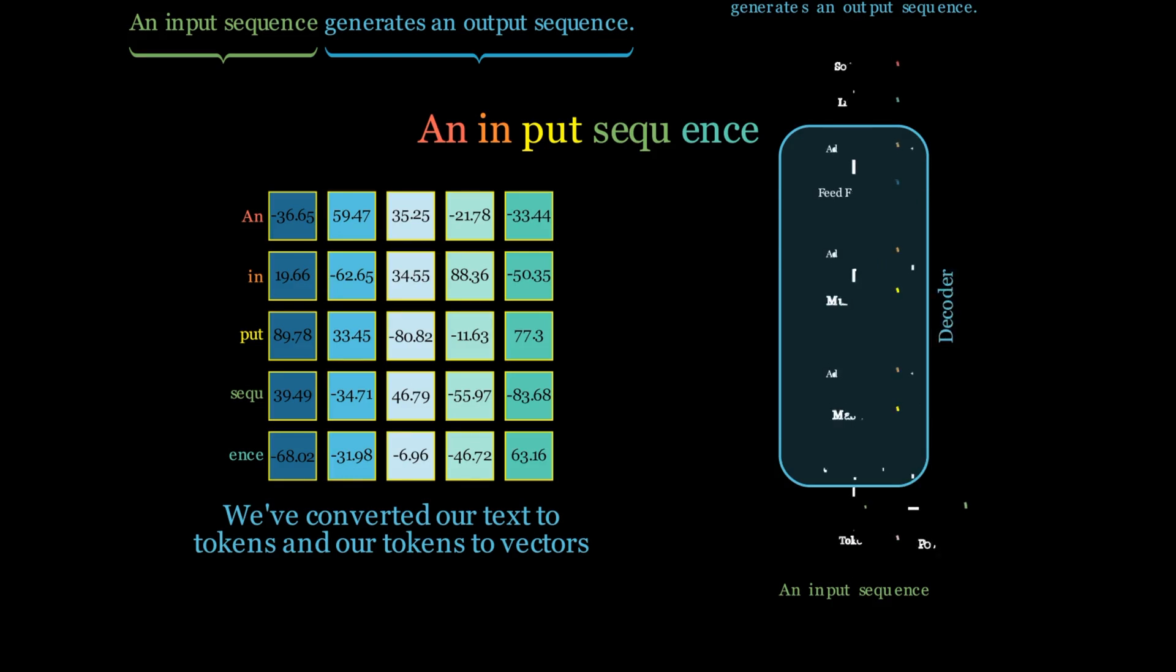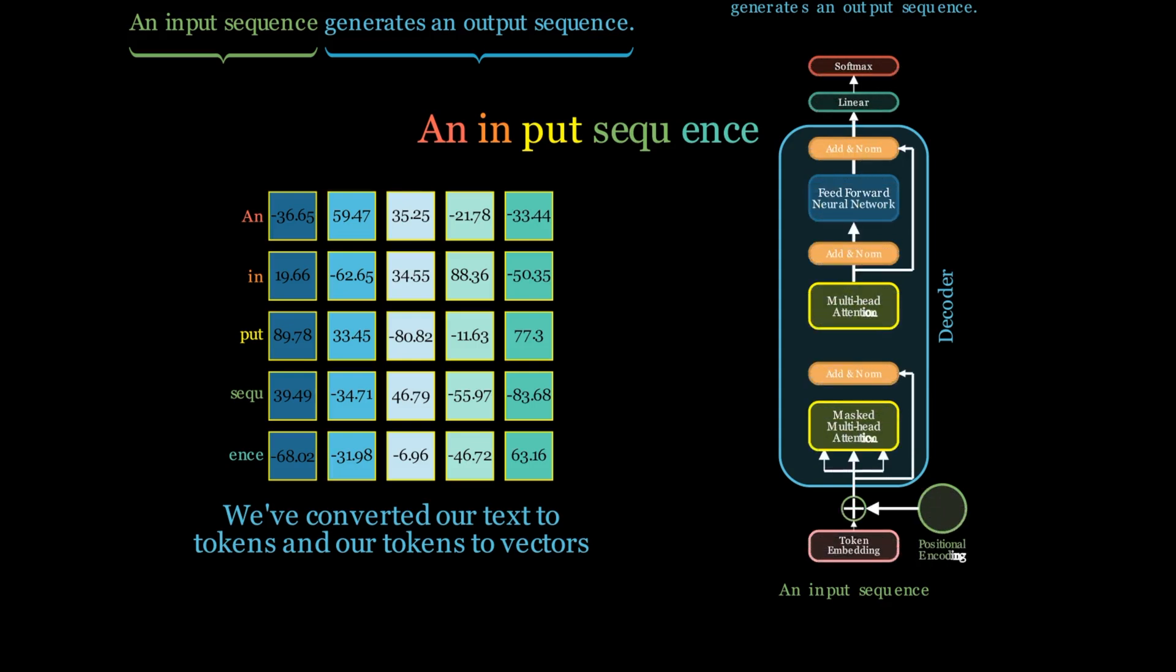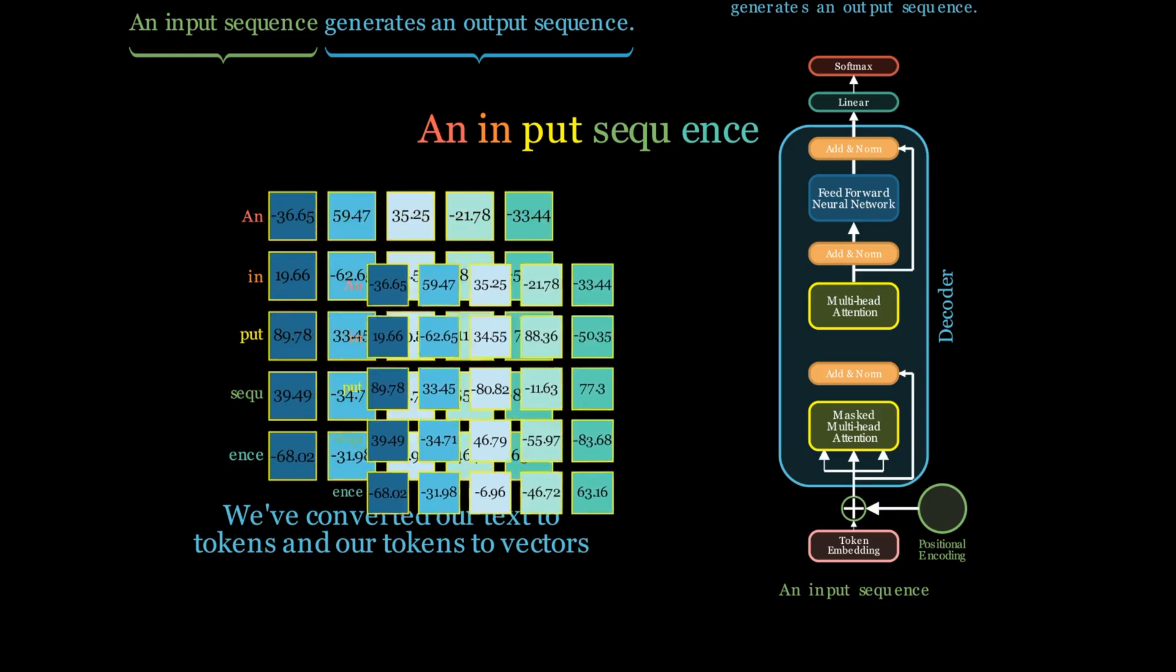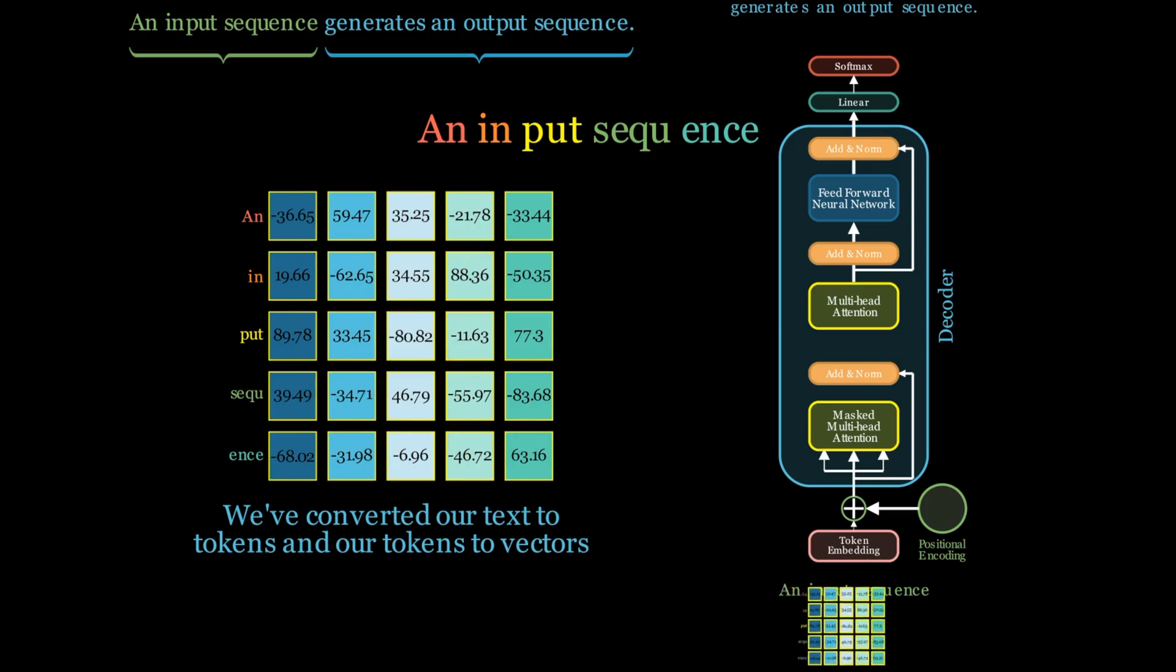Here's a schematic of a general decoder block in an LLM. It has attention heads, a feed forward layer and several normalization layers. When we train the model, we take our input sequence matrix and perform a forward pass through the network. This means that our matrix gets multiplied by all of the weights and biases, which are also stored as vectors and matrices in the transformer.